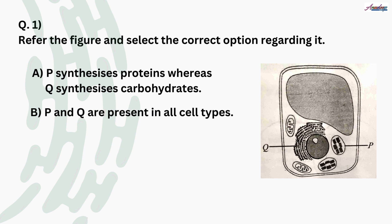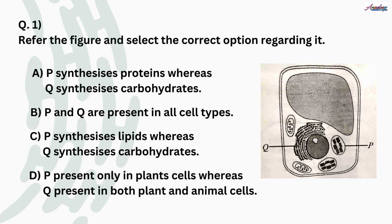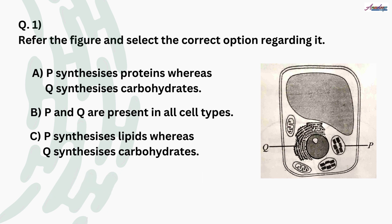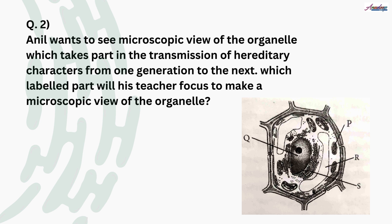Option B says P and Q are present in all cell types — this is also wrong because P is only present in plant cells. Option C says P synthesizes lipids whereas Q synthesizes carbohydrates — we have seen that Q synthesizes protein, so option C is also wrong. Option D says P is present only in plant cells whereas Q is present in both plant and animal cells — option D is correct. So the right answer for question number one is D.